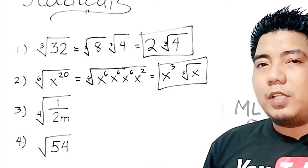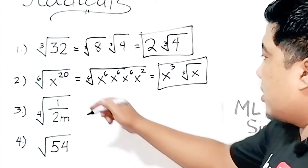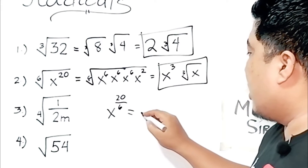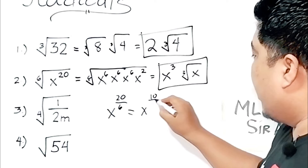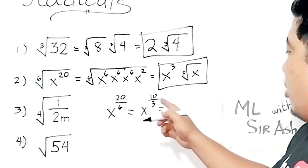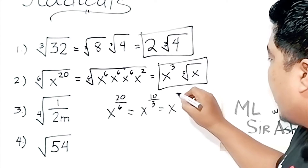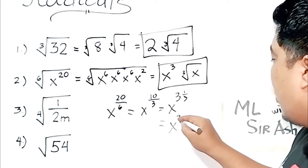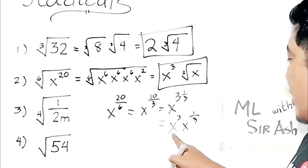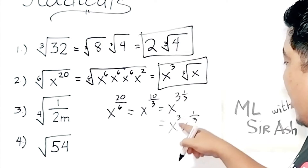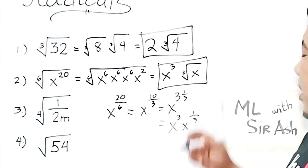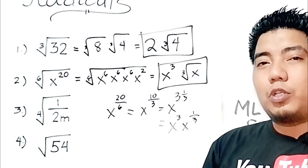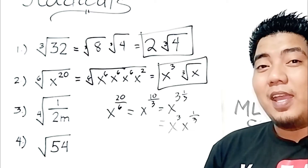Using the rational exponents method: convert to x to the power of 20/6, which simplifies to x to the power of 10/3. Since 10/3 equals 3 and one-third, you can write x³ times x to the power of 1/3. Converting x to the power of 1/3 into a radical expression gives the cube root of x. Either way, the final answer is the same.